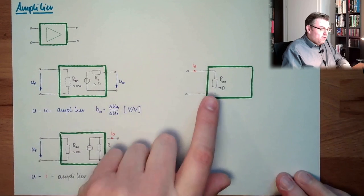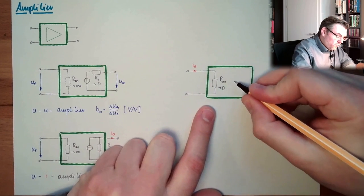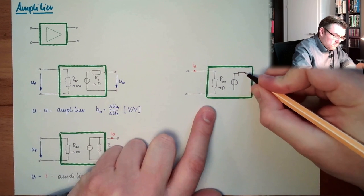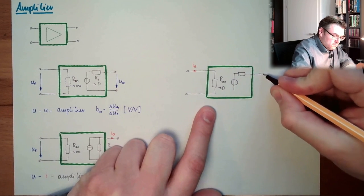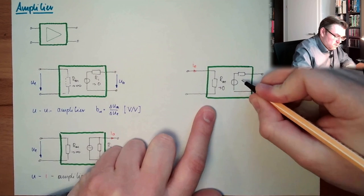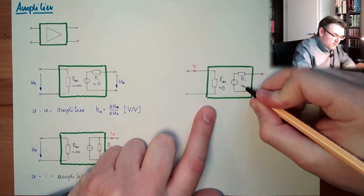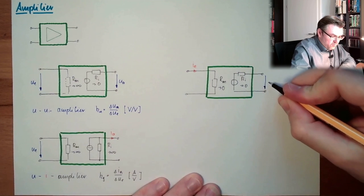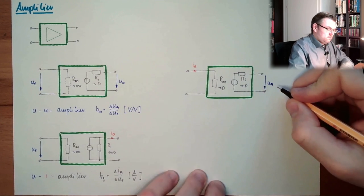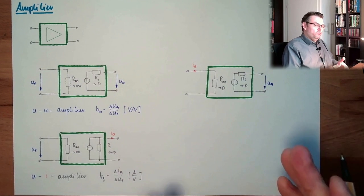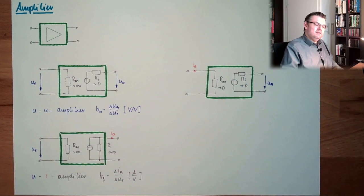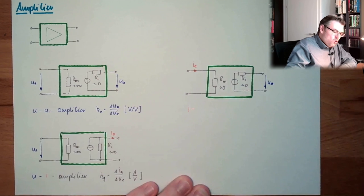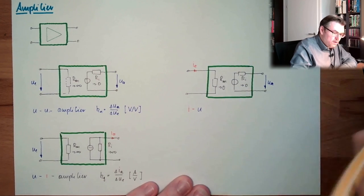And if I am controlling with my measured current, I am controlling again a voltage source. This RI shall also be zero. And I have an output value, Ua. How do you guess, is this amplifier called? It's an IU amplifier.